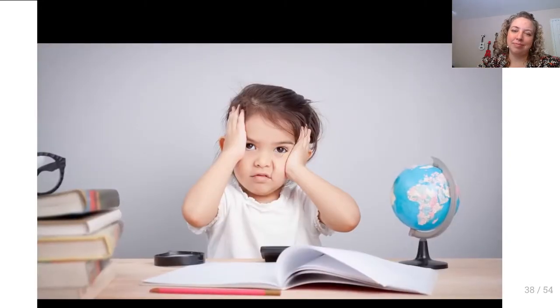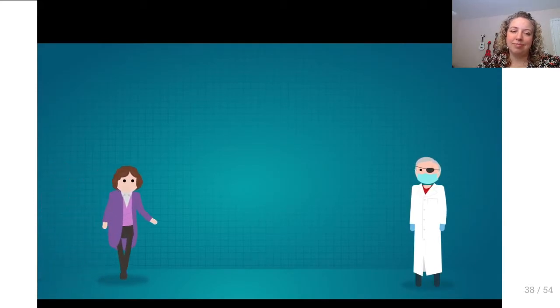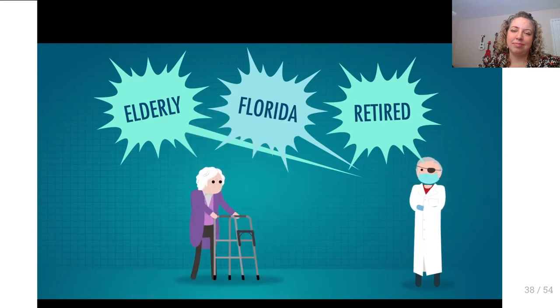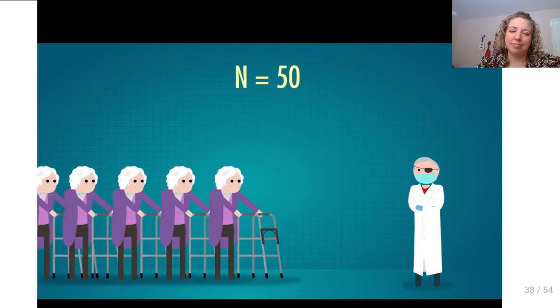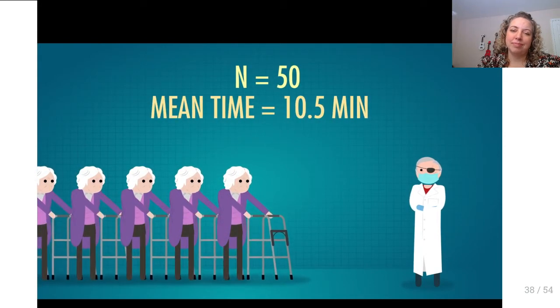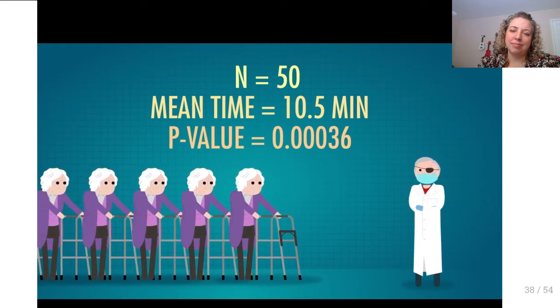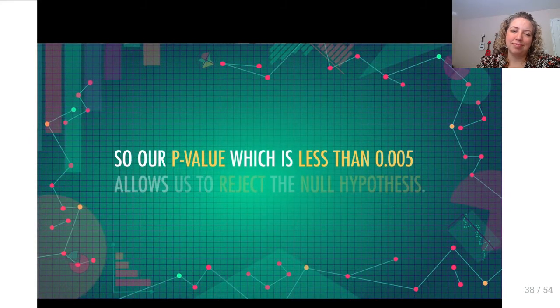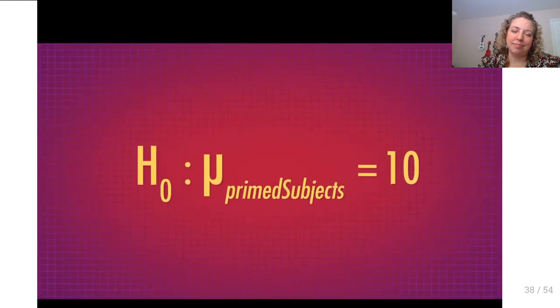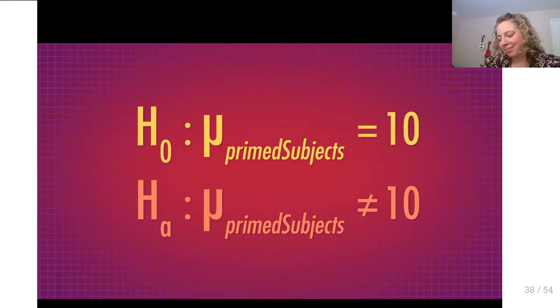A fourth common issue concerns non-significant p-values. If our p-value isn't lower than our alpha, we fail to reject the null — we say 'fail to reject,' not 'accept.' Null hypothesis testing doesn't allow us to accept or provide evidence the null is true — we've only failed to provide evidence it's false. Consider: your friend says there are no black swans in China. You go look and see no black swans — but you can't prove there are none until you've seen every swan. Similarly, you can't prove the null is true. The absence of evidence is not evidence of absence.